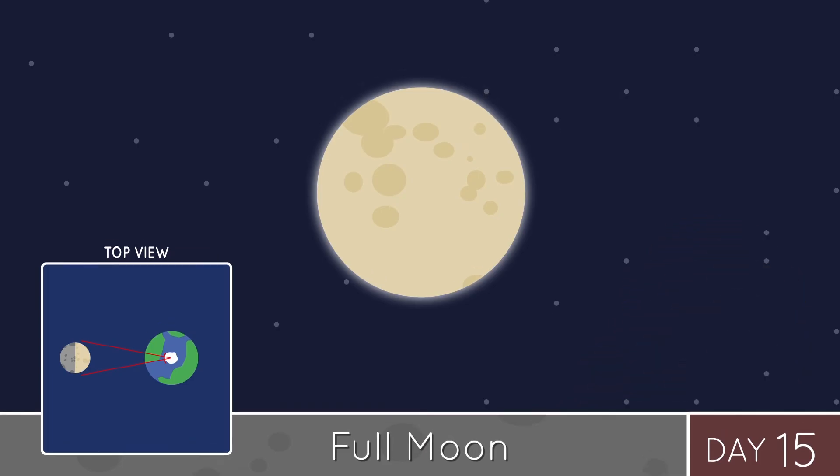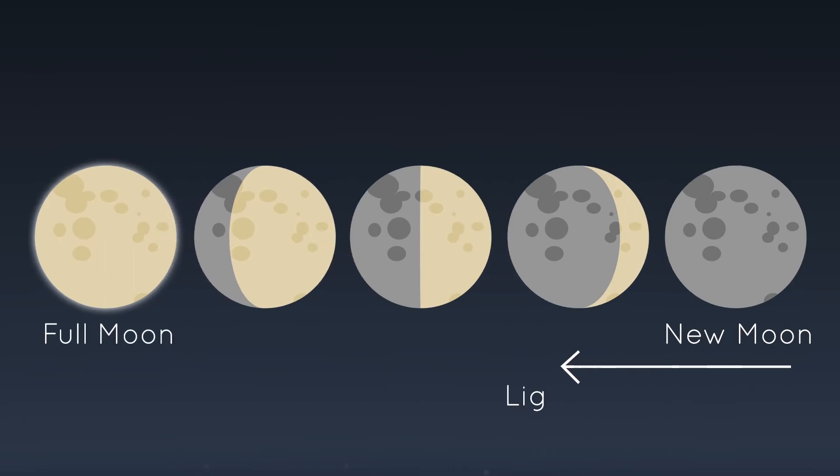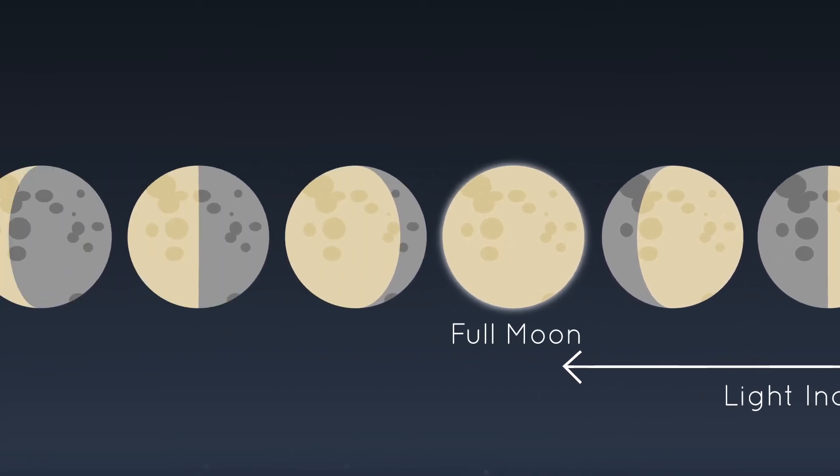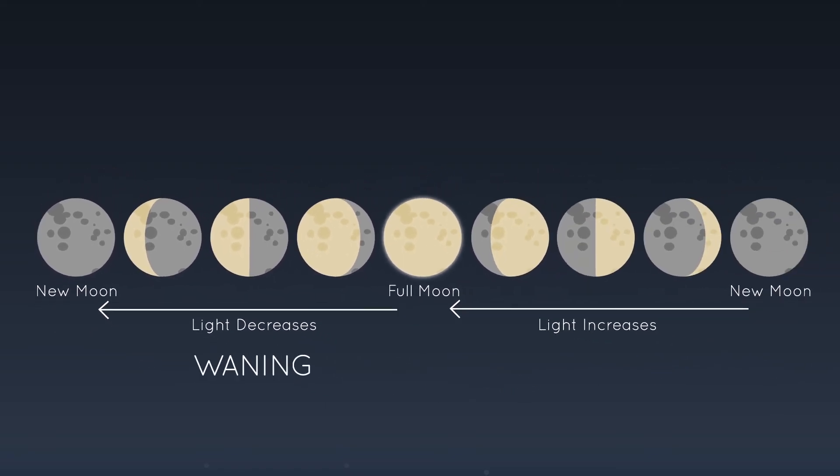Then, something interesting happens. Between the new moon and the full moon, light increases. And now, from the full moon back to the new moon, light must decrease. We call this waning. Wax on, wane off.